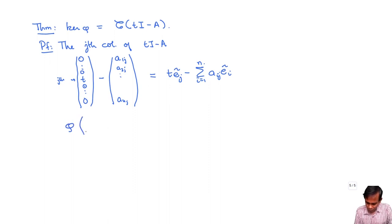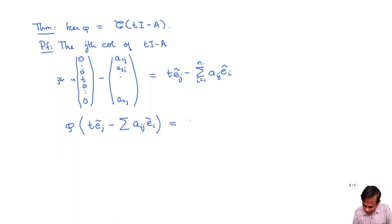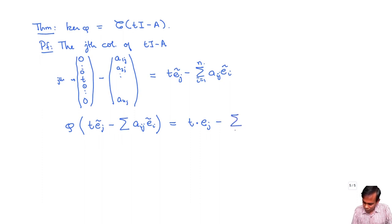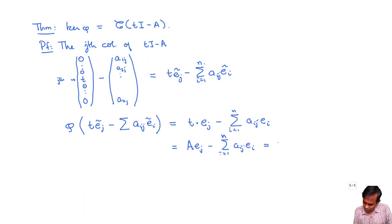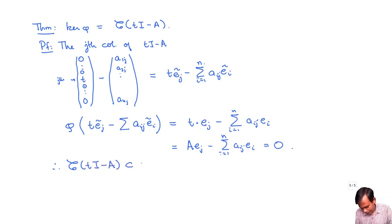Applying phi to the j-th column, we get phi(T * E_j_tilde - sum_i Aij * E_i_tilde). Using the fact that phi is an F[T]-module homomorphism, this becomes T acting on phi(E_j_tilde) minus sum_i Aij * phi(E_i_tilde). Since phi takes E_j_tilde to E_j, this becomes T*(E_j) - sum_i Aij * E_i. But T acts on E_j by the matrix A, so T*(E_j) = A*E_j, which equals exactly sum_i Aij * E_i. So the result is 0, and the column space of T*I - A is contained in the kernel of phi.